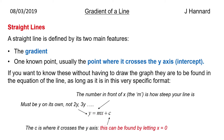If you know the gradient — so if you say y equals 2x plus c and we want to work out what c is — we can let x equal 0, and y will equal whatever, because the intercept is where x equals 0 and whatever the y coordinate is.